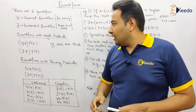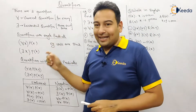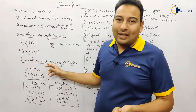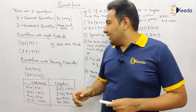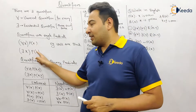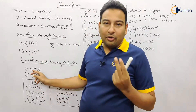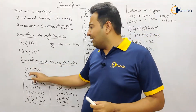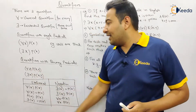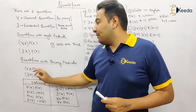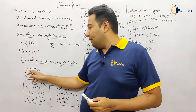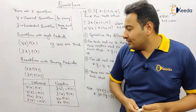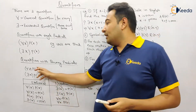Quantifiers can be of single predicate — also called first-level predicate — or they can have two predicates, called binary predicates. Single predicates have only one variable x; binary predicates have two values x and y. For binary predicates, the statement reads: 'For every x, P(x, y) is true' or 'there exists some x for which P(x, y) is true.'